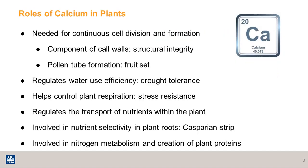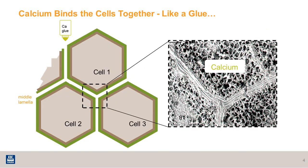Calcium plays many important roles in plants. For this presentation, I'm going to focus on the first bullet point. Calcium is needed for continuous cell division and formation, and therefore is a major component of cell walls, which gives the structural integrity of the fruit. It's also important for pollen formation, which enables fruit set. Calcium, in the form of calcium pectate, acts like a glue that binds cells together.